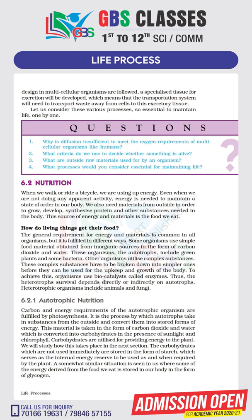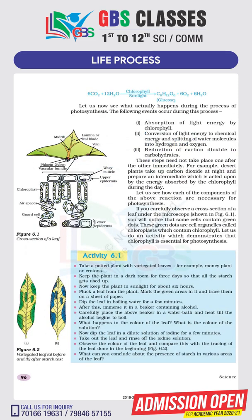Heterotrophic means depending on plants for food. We humans are heterotrophs. For autotrophic nutrition, the carbon and energy requirements of autotrophic organisms are met through photosynthesis. We need light in this process, and we need chlorophyll pigmentation. As seen on page number 96, the chemical reaction is: CO2 plus H2O, with chlorophyll and sunlight, gives C6H12O6 — that is glucose — and releases O2 and H2O.